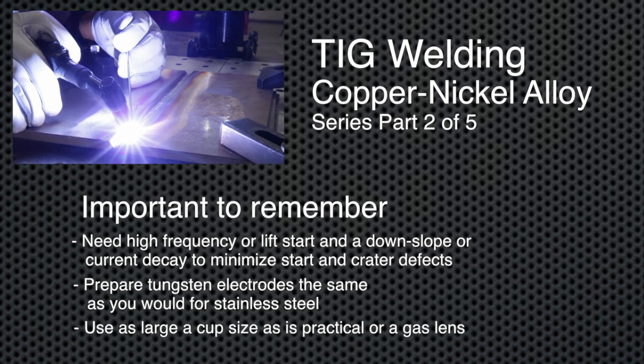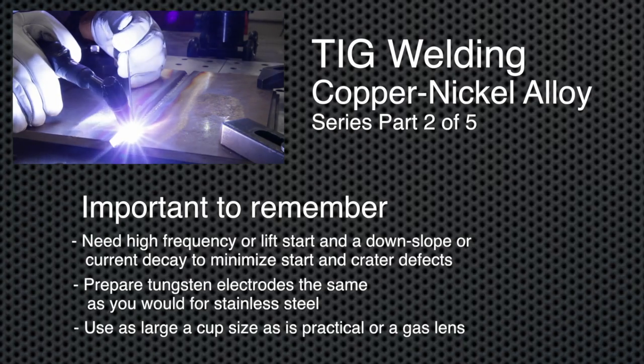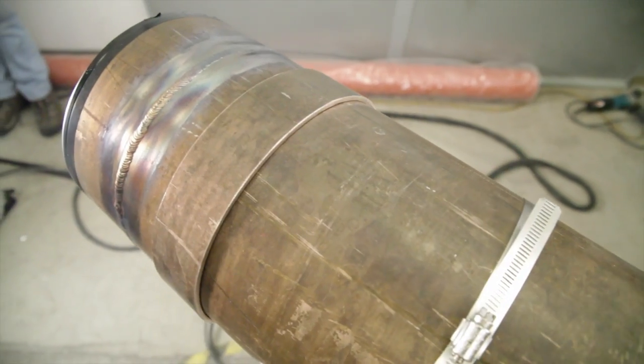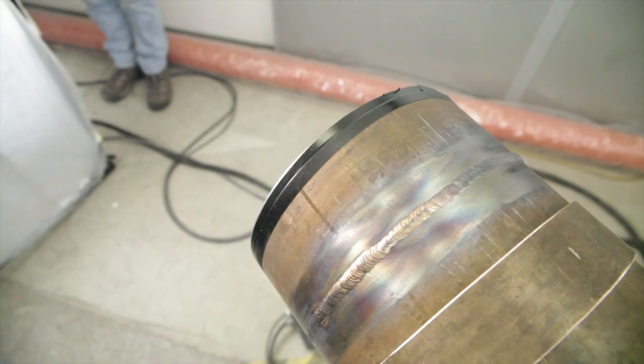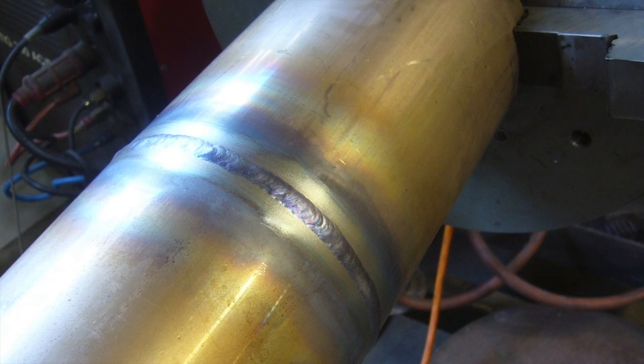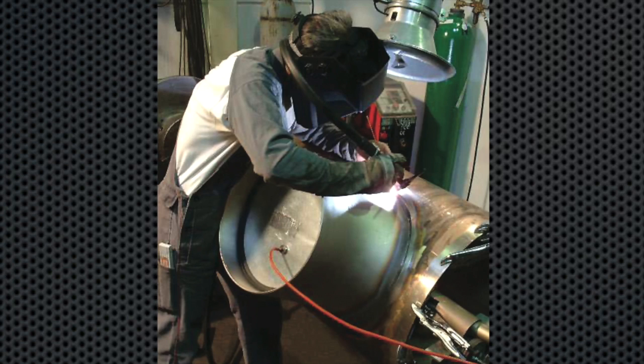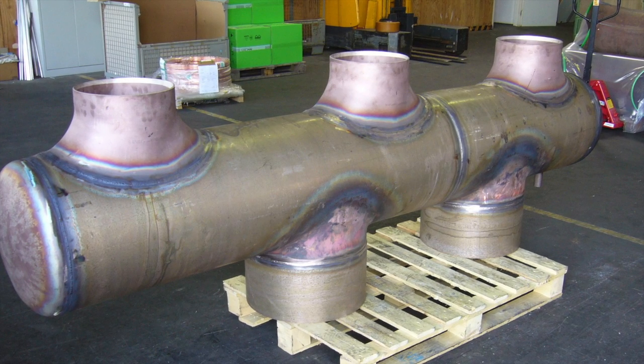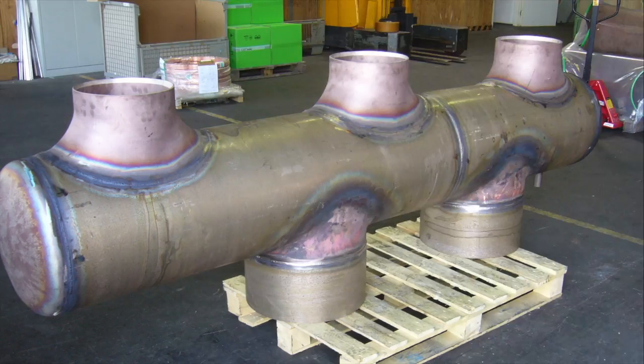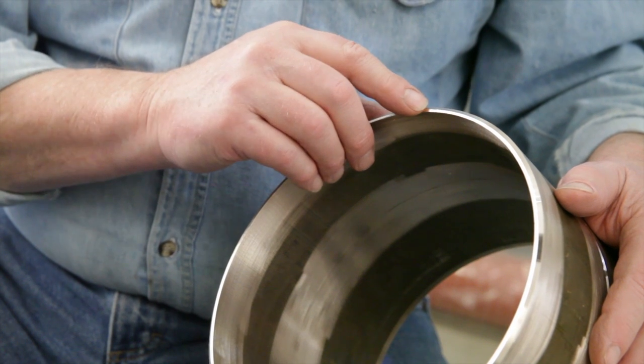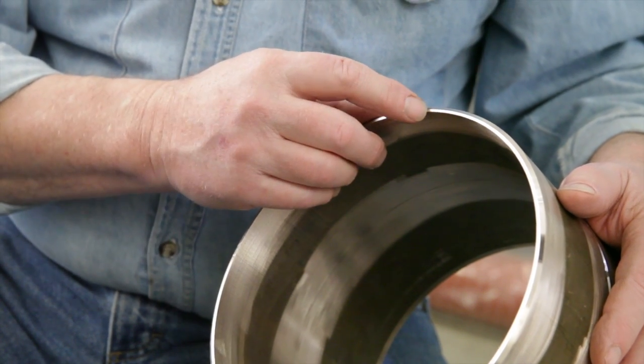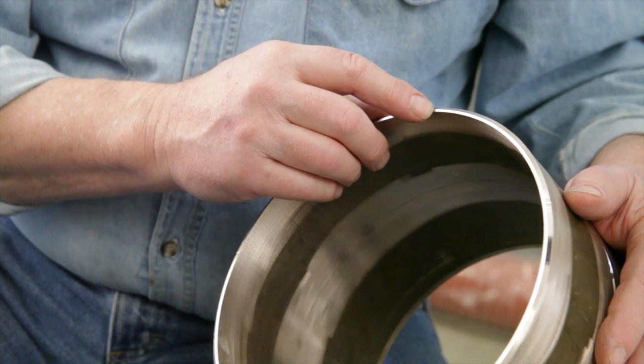In this demonstration, we will be using a pipe which has a 200-millimeter diameter. While this is a common industry pipe size, copper-nickel alloy tube sizes can vary from small-diameter, thin-wall condenser tubes to pipes as big as 610 millimeters in diameter and even larger. We've prepared this pipe for welding using a 45-degree bevel angle and a 1.5-millimeter root face.